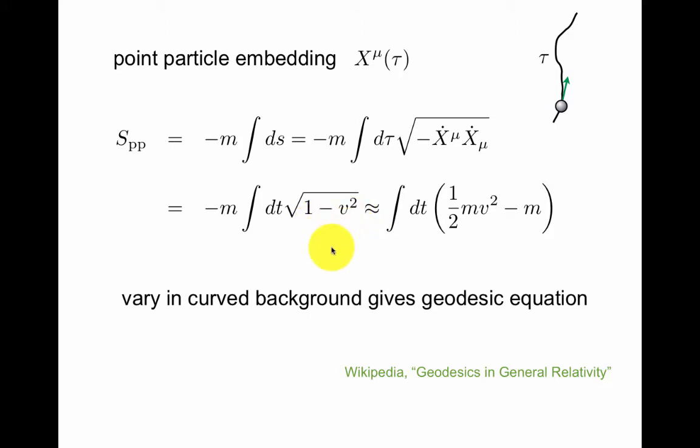This is the first exercise in Polchinski chapter 1. You can expand this for small velocities and recognize the usual kinetic term for a point particle minus the energy MC squared. Of course C we set to 1. If you're not familiar with these units, go back and review Zwiebach's book.